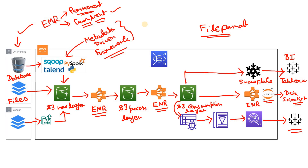So the four best practices to remember are: file format, partitioning, transient EMR clusters, and a metadata-driven ingestion framework. Additionally, the RDS drawn in this architecture plays a vital role. Suppose you launch a transient EMR cluster and use Hive for computation — where will the Hive metadata be stored? If you store it inside the EMR cluster itself and that cluster goes down, you cannot access the Hive data, because Hive data is only accessible when its metadata is accessible.